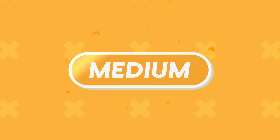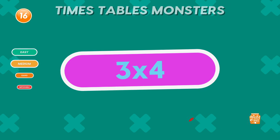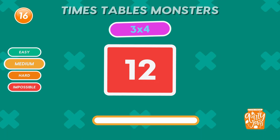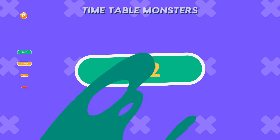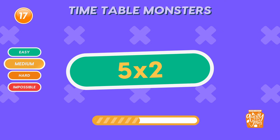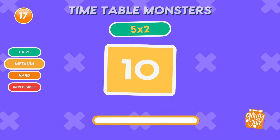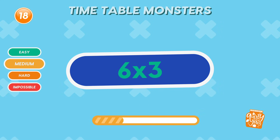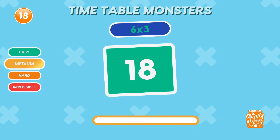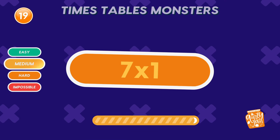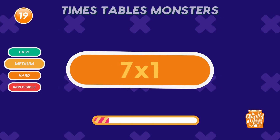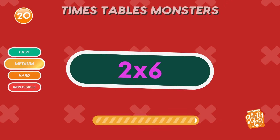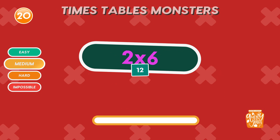Now let's step it up with the medium level. What is 3 times 4? 12. Nice one! What is 5 times 2? 10. Super smart! What is 6 times 3? 18. You're on a roll! What is 7 times 1? 7. Perfect! Keep it up! What is 2 times 6? 12. Brilliant!